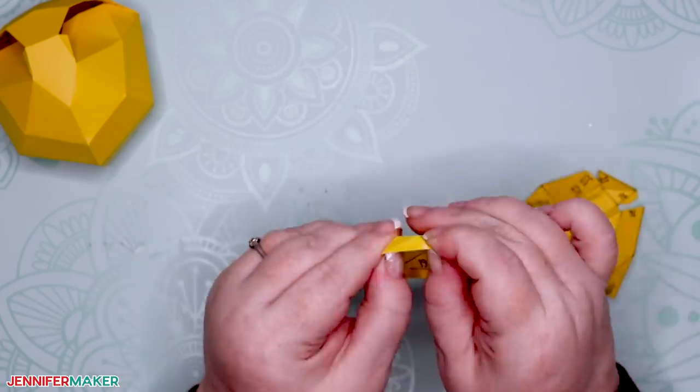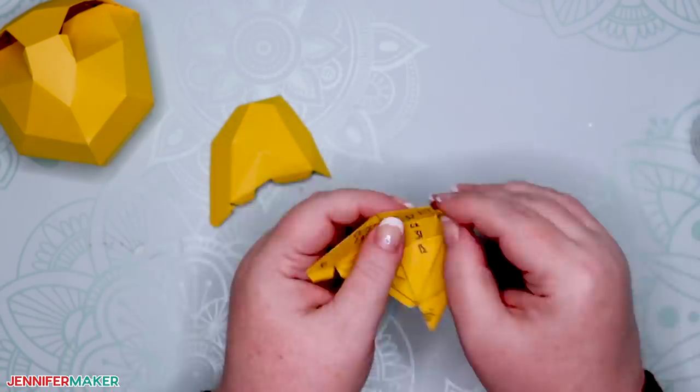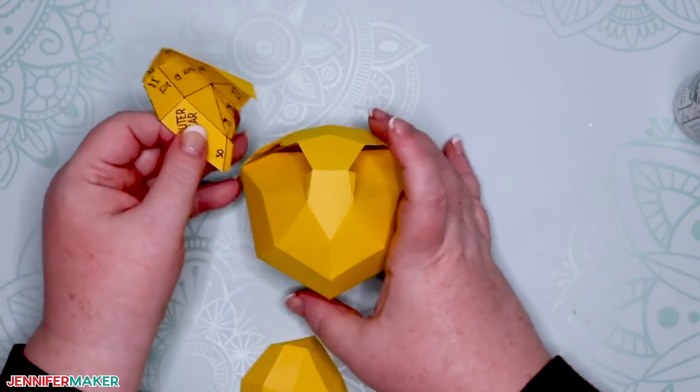Here's what the outer ear looks like when it's all glued. Then be sure to glue the other outer piece together as well.